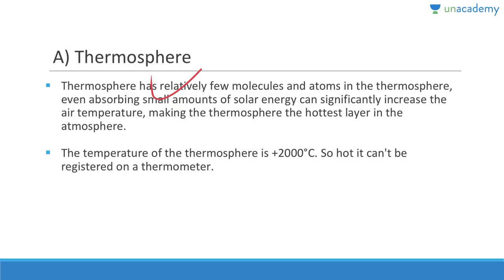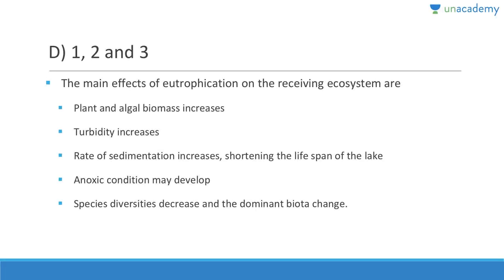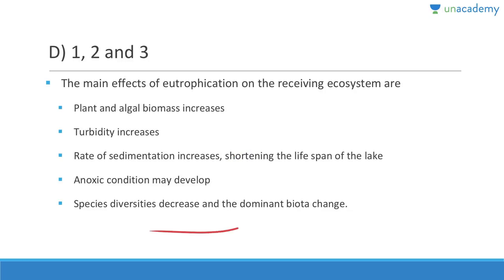Question 128: Effects of eutrophication include increased plant and algal biomass, increased turbidity (water becomes opaque), increased rate of sedimentation, development of anoxic conditions, and species diversity decrease with dominant species change. Main effects: plant/algal biomass increases, turbidity increases, sedimentation rate increases, lake lifespan shortens, anoxic conditions may develop, and dominant species change.